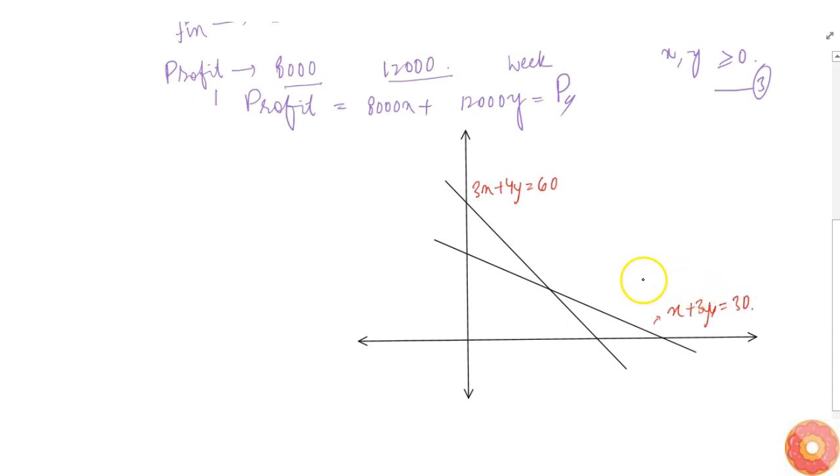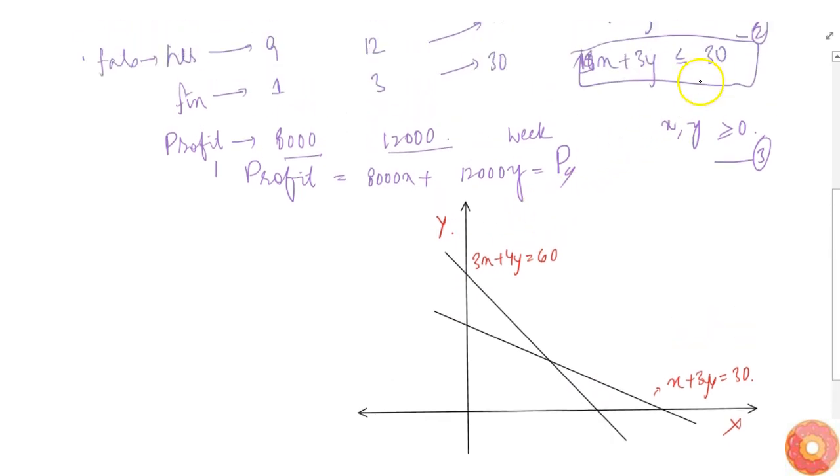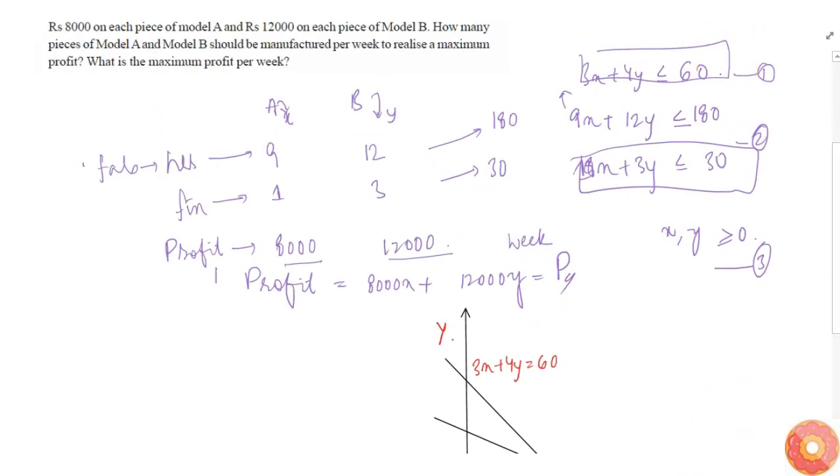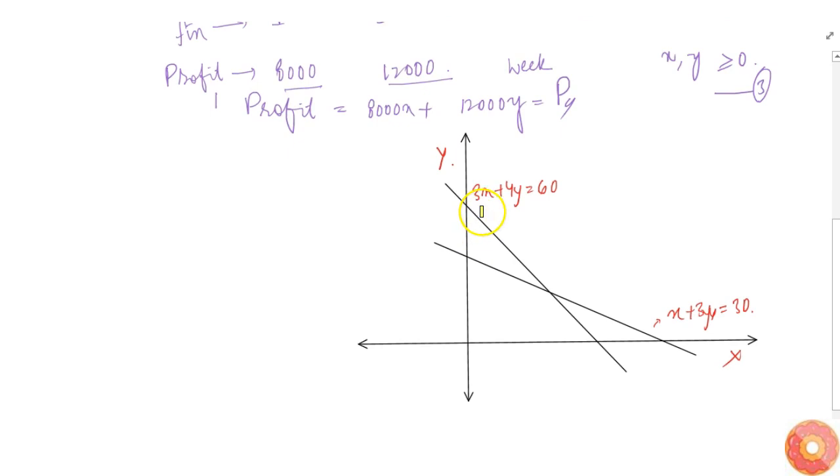This is the usual X axis and Y axis graph. Now we need to find region R which supports these constraints. First, the constraint 3X plus 4Y less than 60 will be the region towards the left of this line.